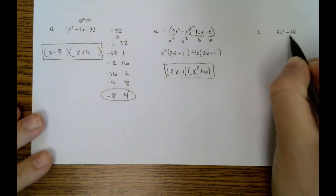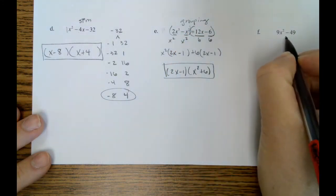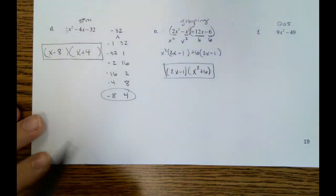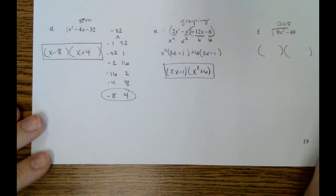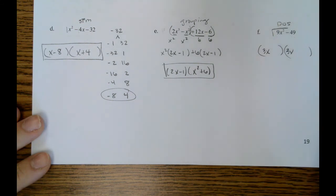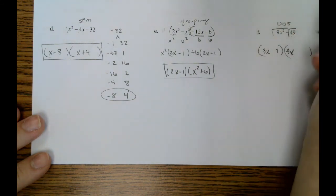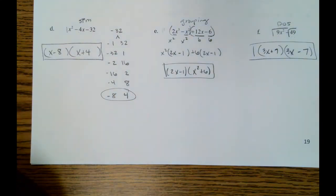Okay. Letter F. This is two terms. Oh, I forgot to write grouping up here. This is two terms with subtraction, and 9 and 49 are both perfect squares. So, we can do difference of squares on this one. The square root of 9x squared is 3x. The square root of 49 is 7. One of them will have addition, and one will have subtraction.